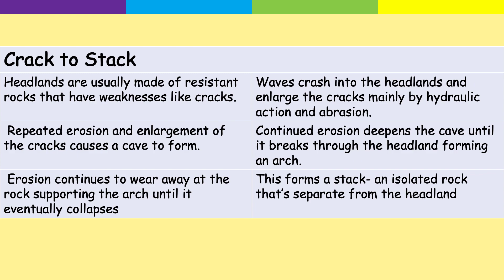Here are the answers in order. First: headlands are usually made of resistant rock that have weaknesses like cracks. Second: waves crash into the headlands and enlarge the cracks, mainly by hydraulic action and abrasion. Third: repeated erosion and enlargement of the cracks causes a cave to form. Fourth: continued erosion deepens the cave until it breaks through the headland, forming an arch. Fifth: erosion continues to wear away the rock supporting the arch until it eventually collapses, forming a stack — an isolated rock separate from the headland. Finally, the stack is eroded and becomes smaller, forming a stump.